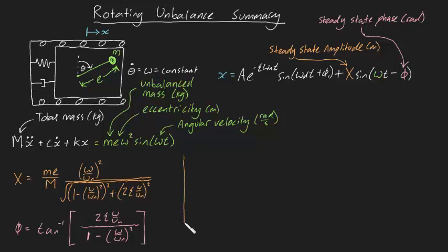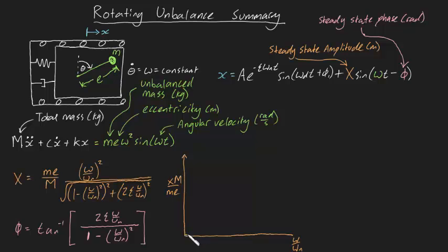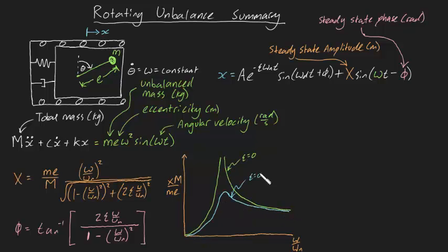By arranging the first equation, capital M X divided by m e can be plotted against the frequency ratio omega on omega n. Here's what the curve looks like for zeta equal to 0, 0.1, 0.2, and 1.